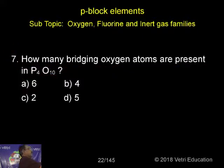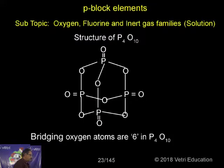So let me show you the structure and I will inform you how the bridging atoms are 6. Then you follow, this is the structure of P4O10.